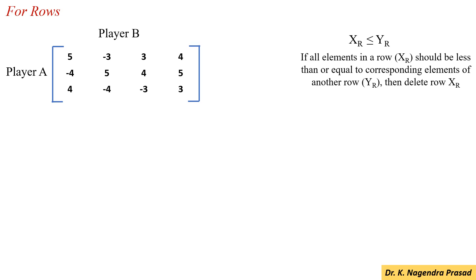First, we apply the dominance rule for the rows. We know that if all the elements in a row — let us consider row XR — are less than or equal to the corresponding elements in any other row, let us consider row YR, then we have to delete row XR.